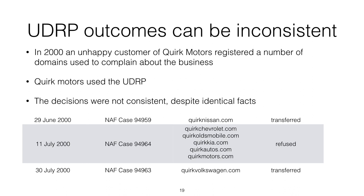UDRP outcomes have been criticized for being inconsistent, and this is illustrated by a series of cases from 2000 when an unhappy customer of Quark Motors registered a number of domain names and used them to complain about the business. Quark Motors used the UDRP to take control of those domain names.